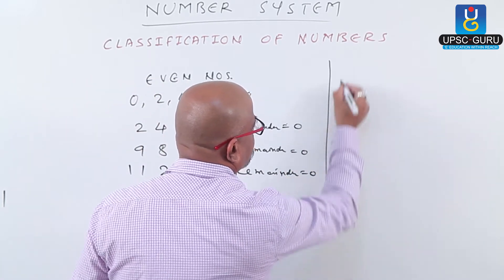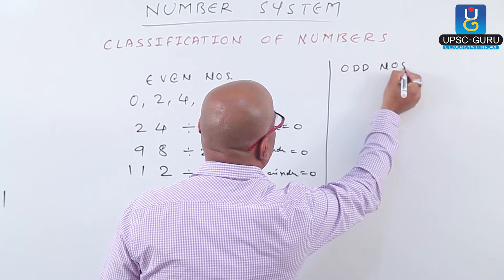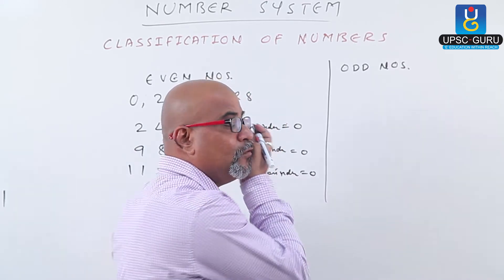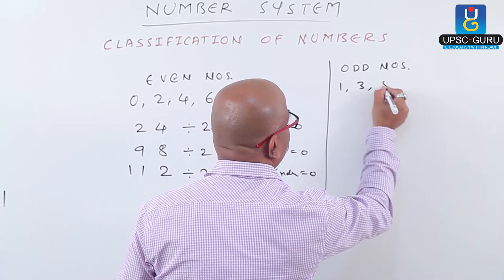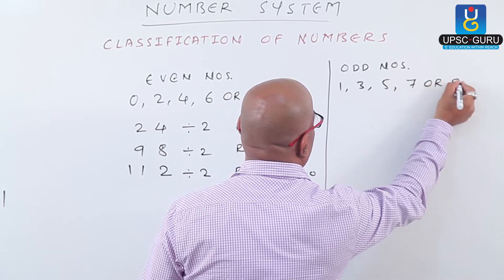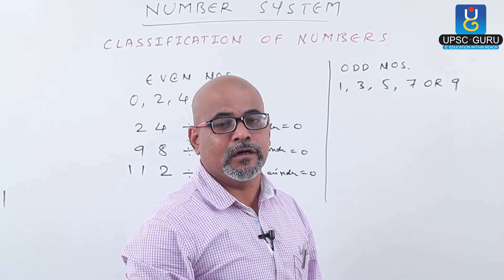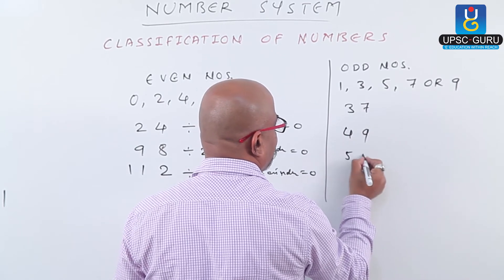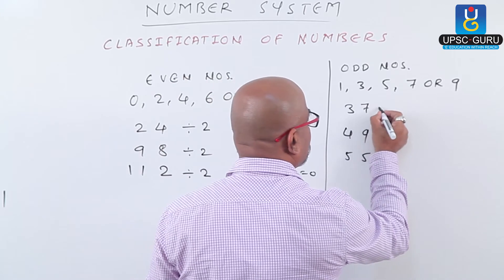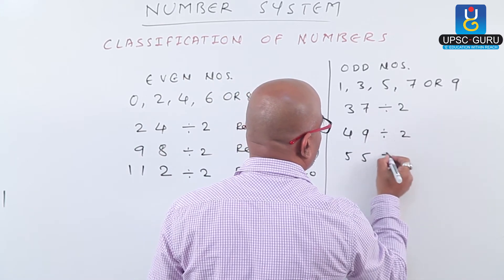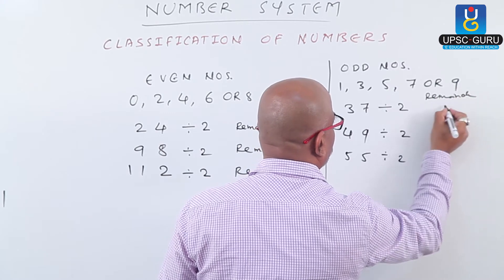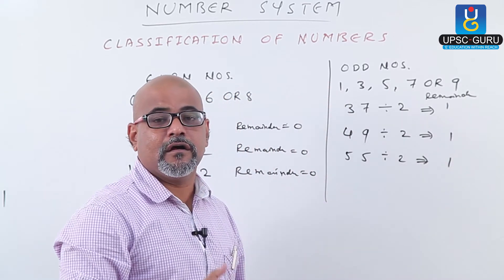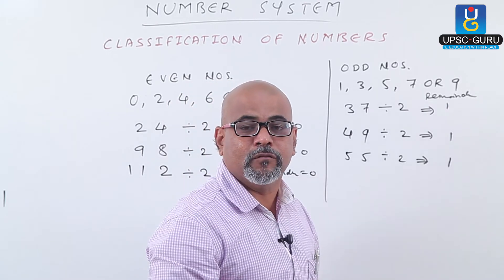Now which are the odd numbers? The numbers in which the last digit, or digit in the unit place, is 1, 3, 5, 7, or 9 — those numbers are called odd numbers. For example, 37, 49, 55 — all these are odd numbers. If we divide any odd number by 2, we get remainder always 1.